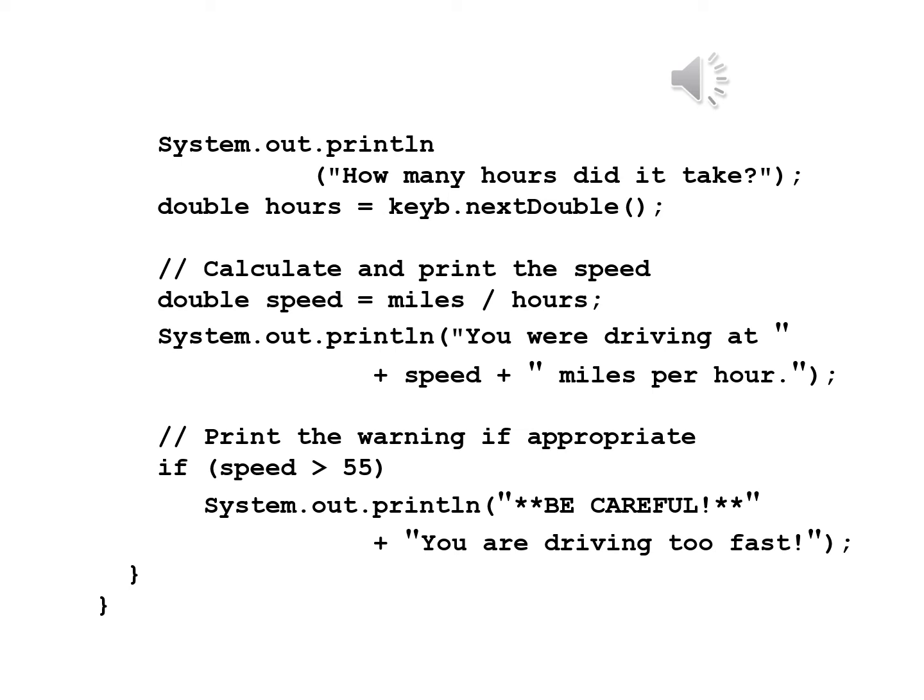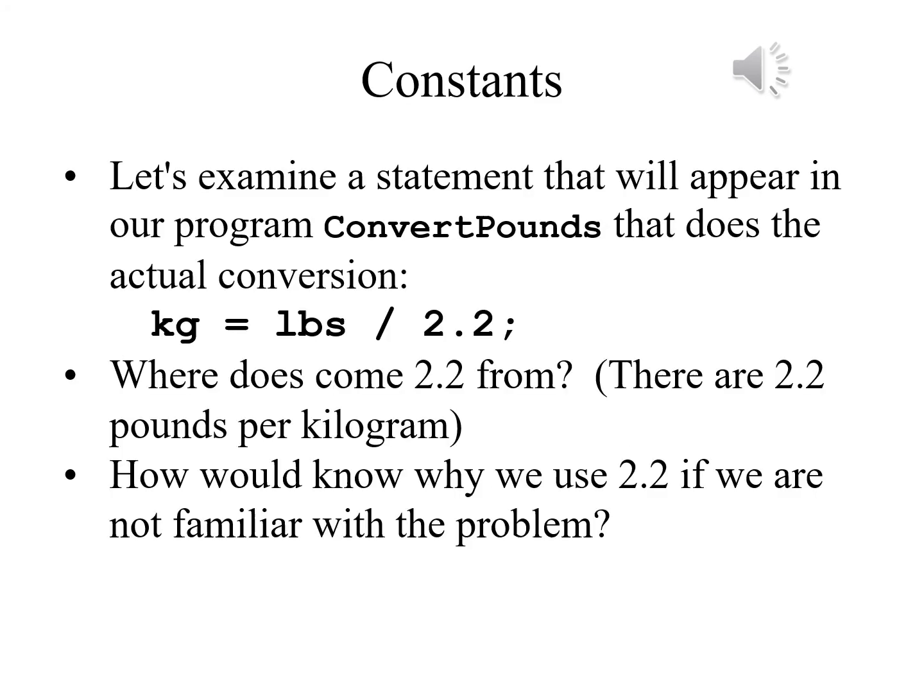'Print the warning if appropriate' is the comment we add here. If speed is greater than 55, System.out.println 'Be careful, you are driving too fast.' After that print statement, a close brace for the main method and a close brace for the class.